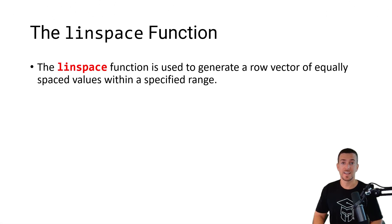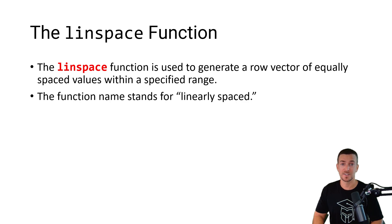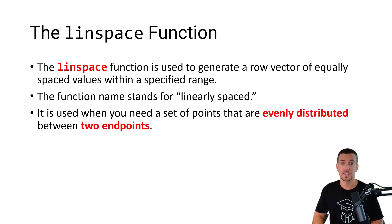The LINSPACE function is used to generate a row vector of equally spaced values within a specified range. The function name stands for linearly spaced. It is used when you need a set of points that are evenly distributed between two endpoints.